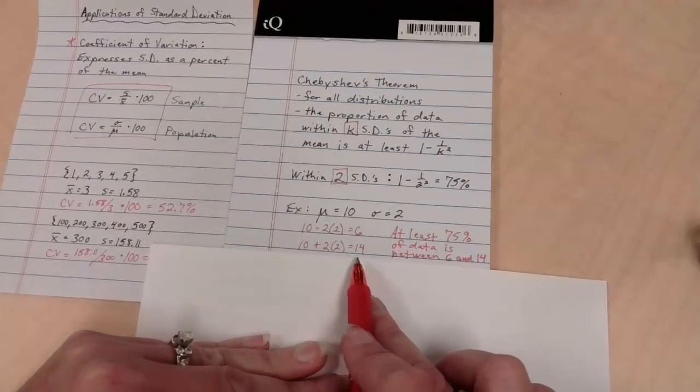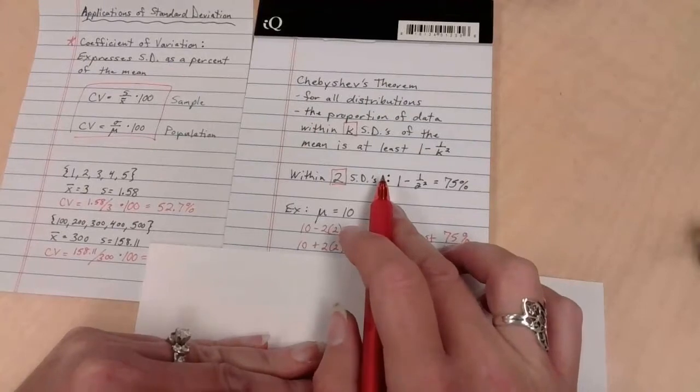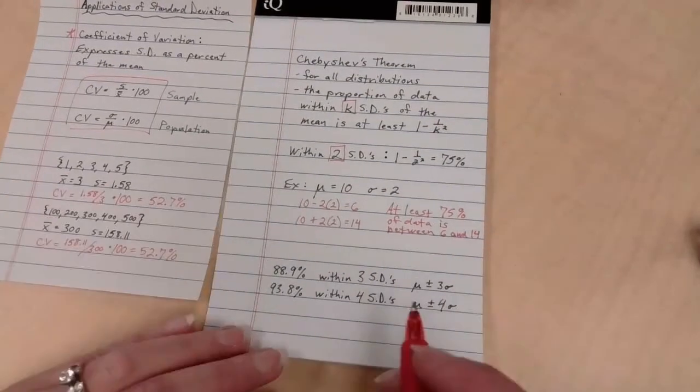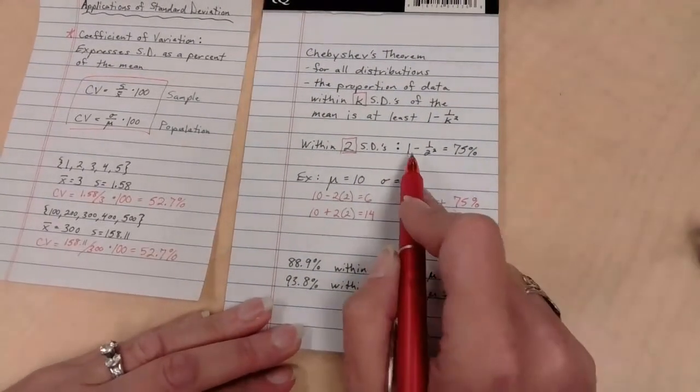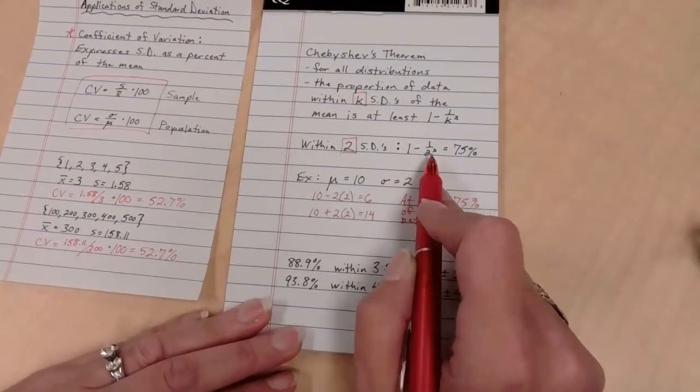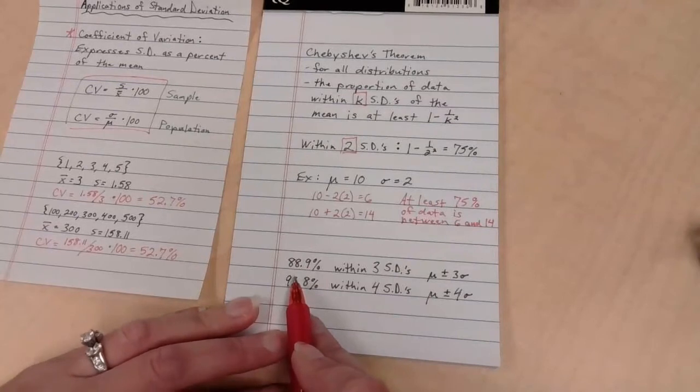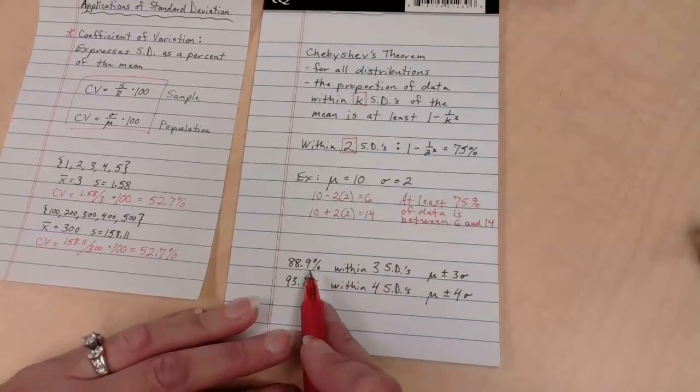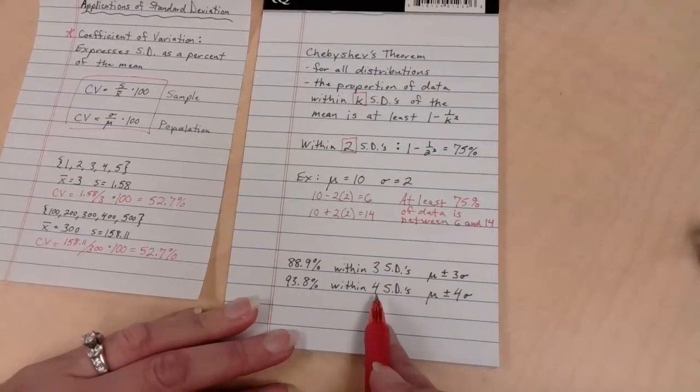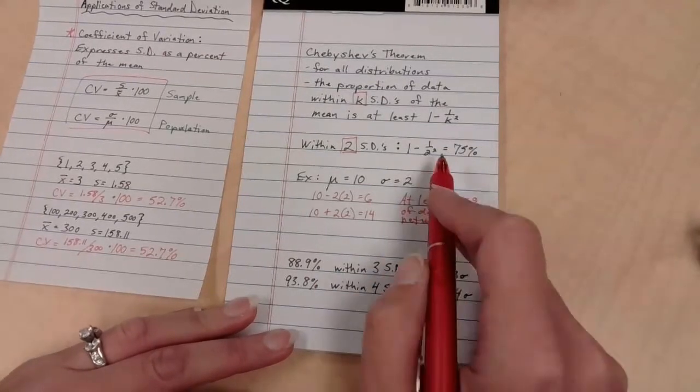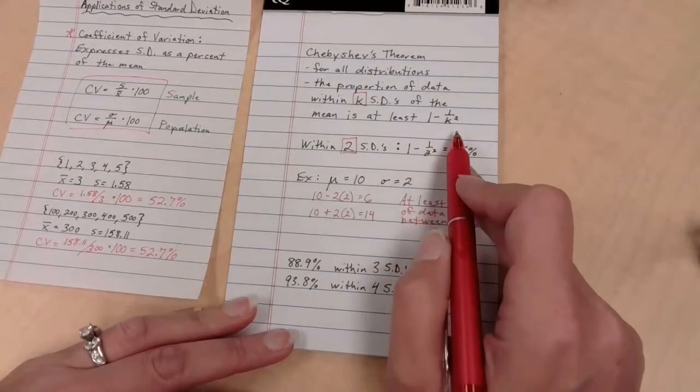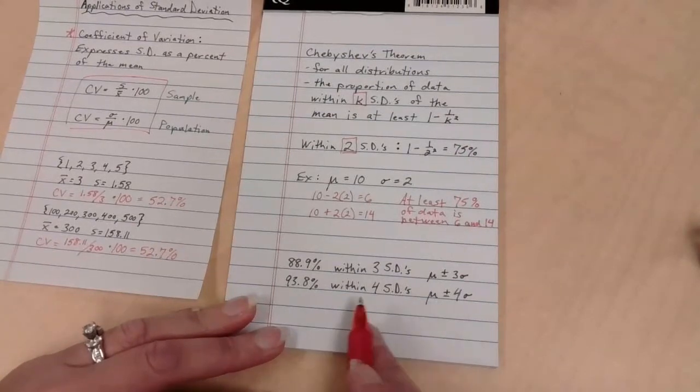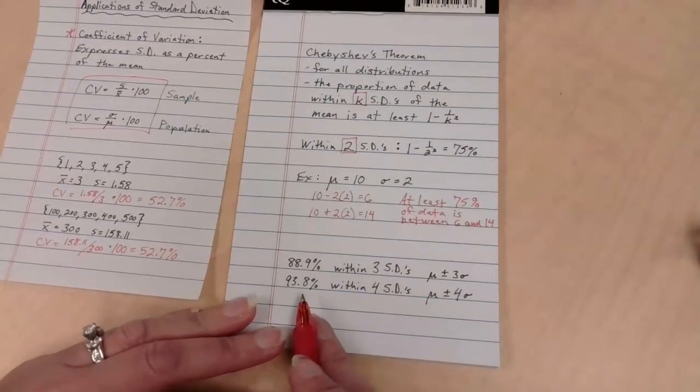The interesting part about this for Chebyshev's theorem is that this doesn't need to be recalculated on a regular basis because the numbers always work the same. So we also happen to know then that if we are within 3 standard deviations, 1 minus 1 over 3 squared is 1 minus one ninth, that gets me at about 88.9%. If I am within 4 standard deviations, 1 minus 1 over 4 squared gives us 93.8%.